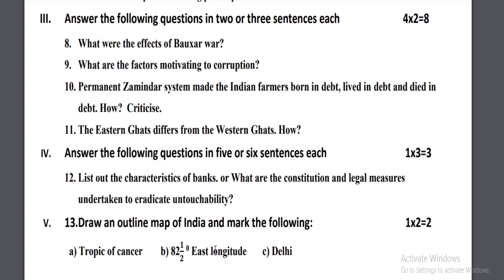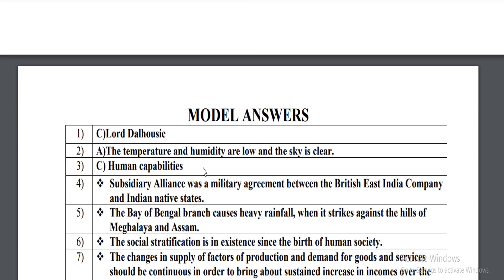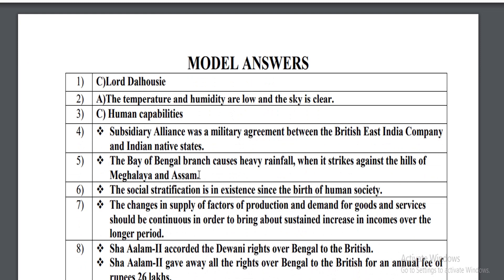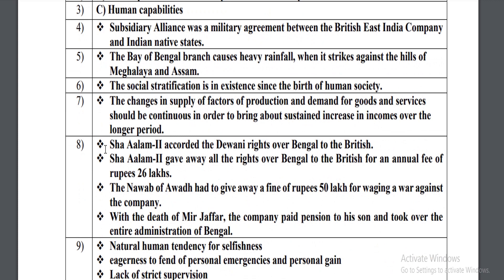These are the model answers for this question paper. Observe the answers and how to practice answering the questions. You have to answer the questions point-wise. The first few are one-sentence questions. From question eight onwards you have to answer in two to three sentences or up to four sentences. For question eight there are four points, and for question nine there are also four points — answer all Social Science questions in point-wise format.